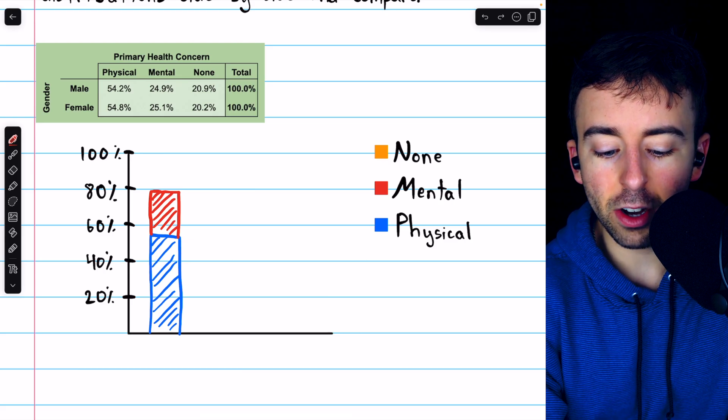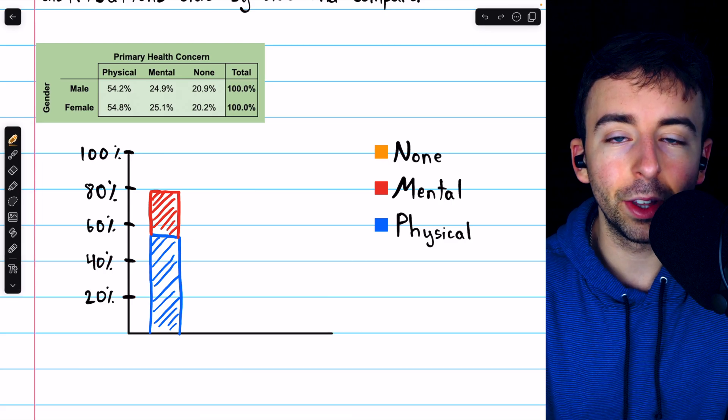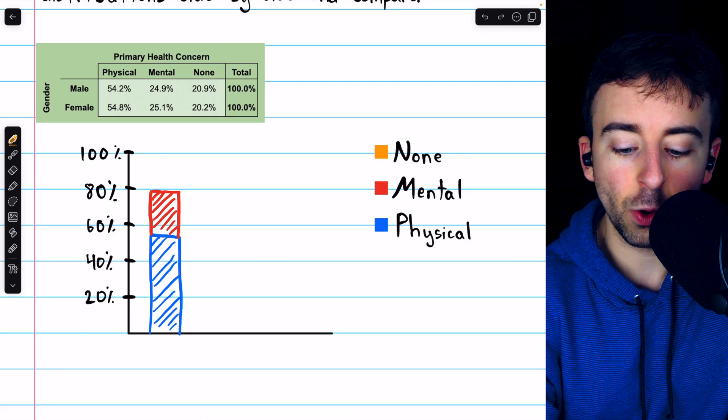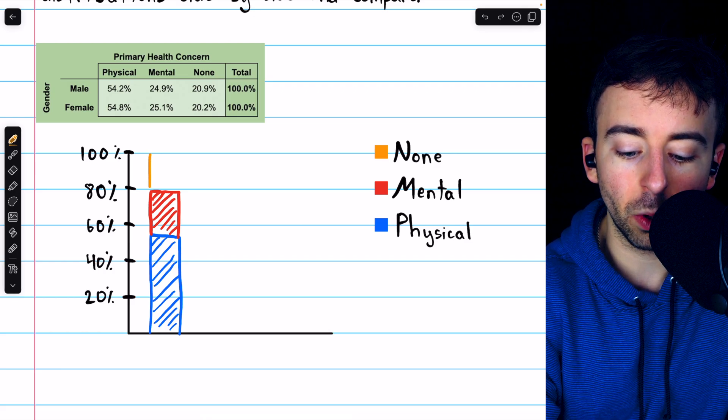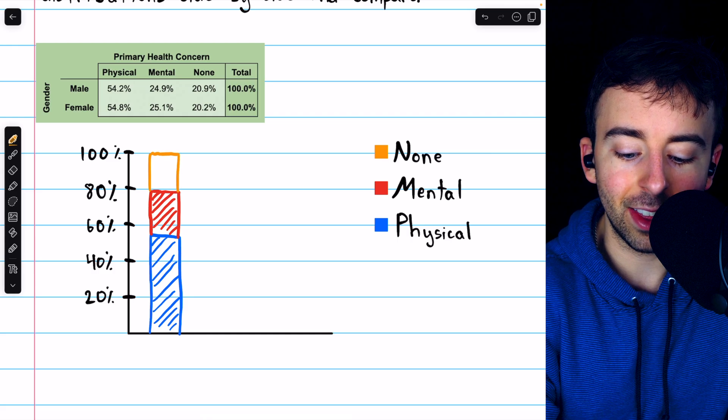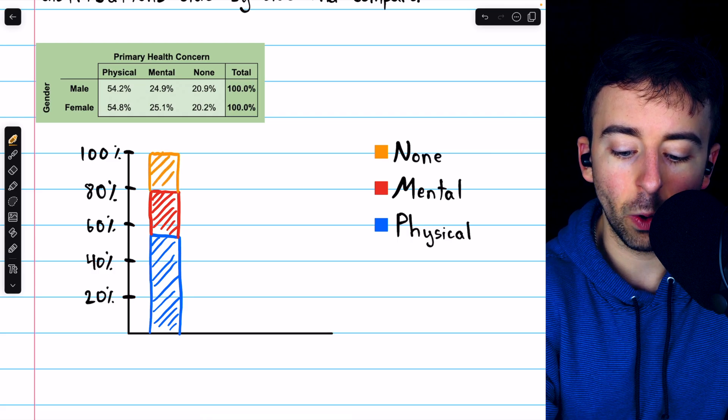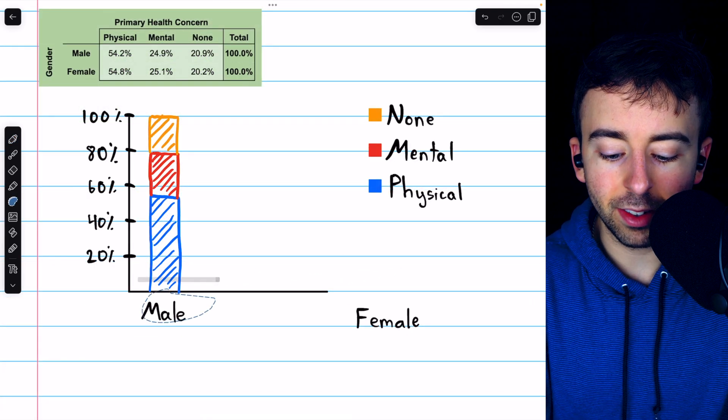Now, the next category is the men who said they have no primary health concerns. That's the last category. So I know it has to go up to 100%. I don't have to do any funny math there. And I will shade that orange. So this bar represents the males.